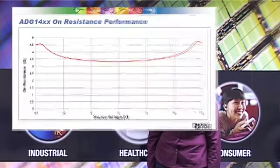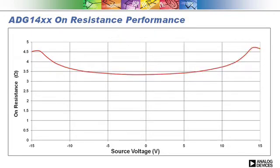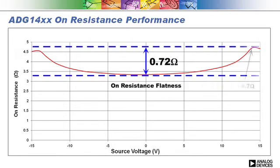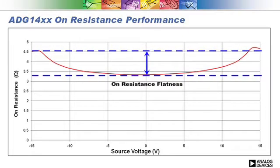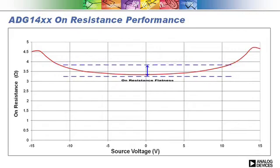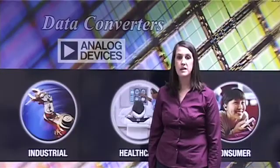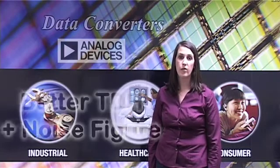Here we see a plot of the on-resistance flatness for an 8-to-1 multiplexer, the ADG1408. The maximum on-resistance is 4.7 ohms and the on-resistance flatness is 0.72 ohms. As you can see from the plot, depending on the voltage of interest, the performance can be even better than that specified in the datasheet. Low on-resistance flatness equates to low distortion, which means a better THD plus noise figure for the product.